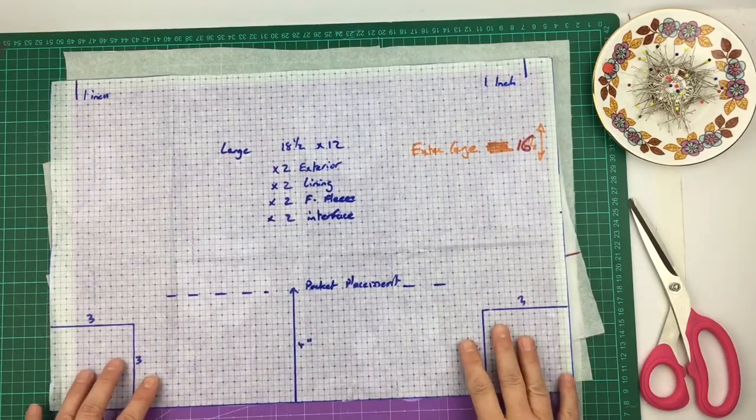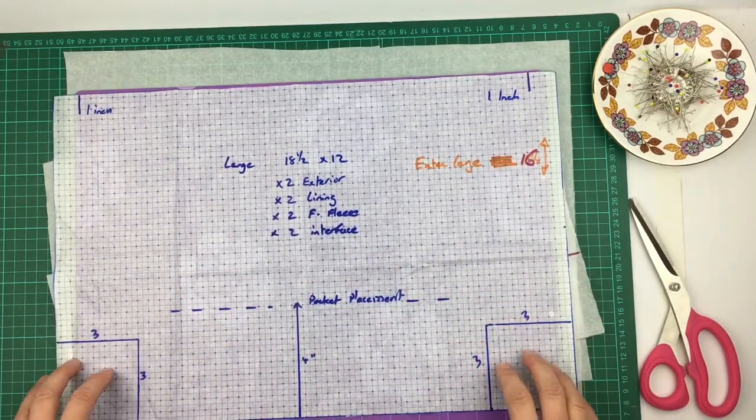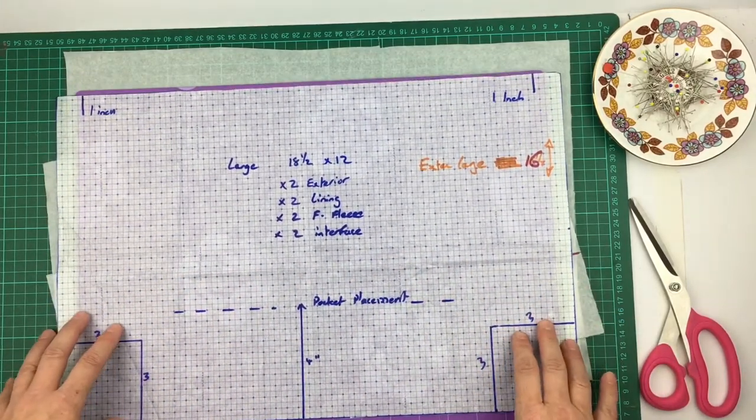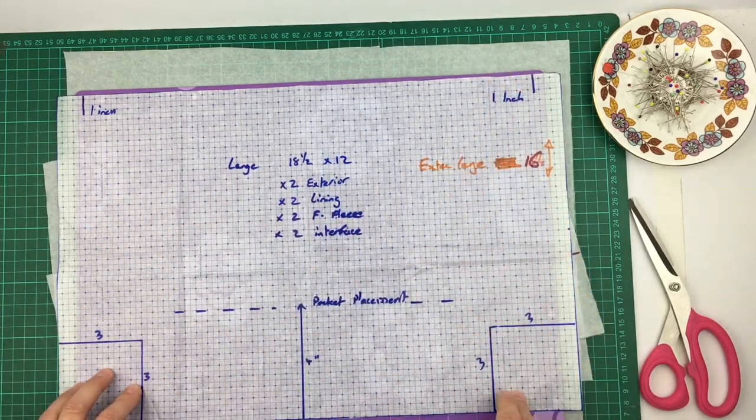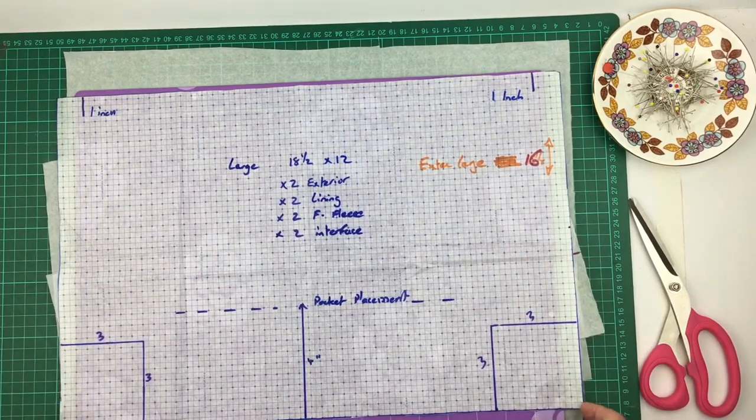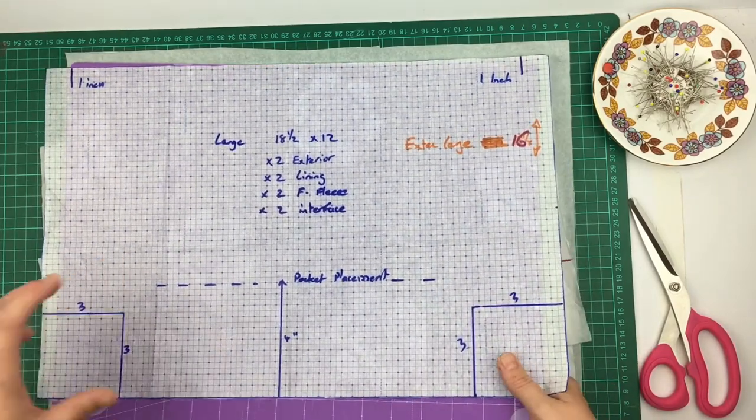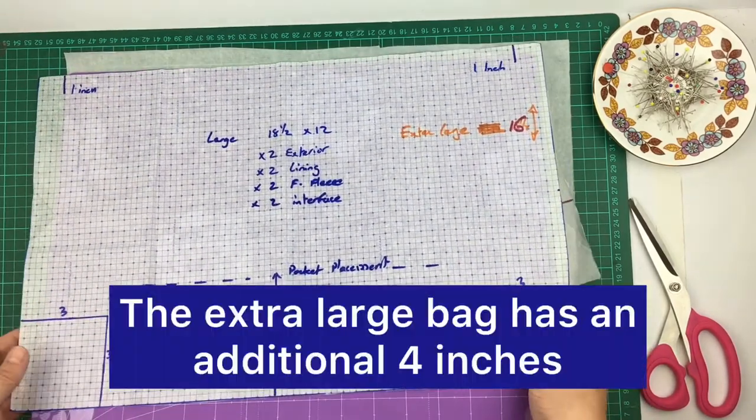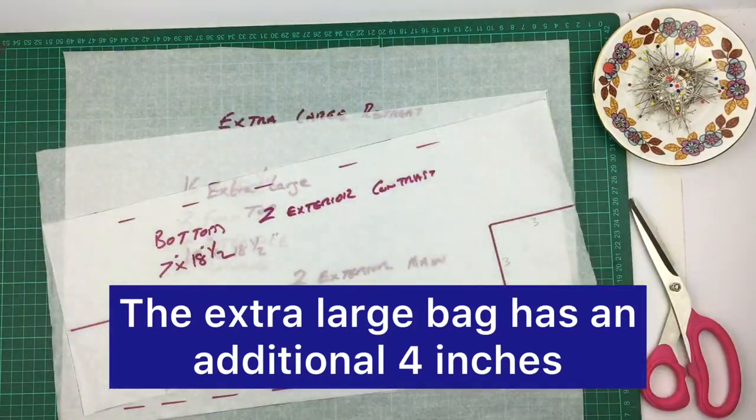In front of me I have a tissue paper of that large one and the dimensions of the large one are 18 and a half by 12, and you cut all your fabric to that size. But when you want to create an extra large one, we're going to need to put an extra four inches on the bottom.